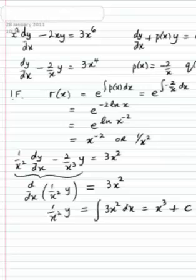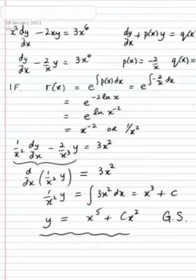Finally, to find y, we multiply everything through by x squared. So y becomes x to the 5 plus cx squared. And that's the general solution of the original differential equation.